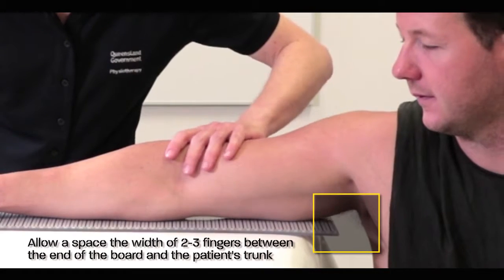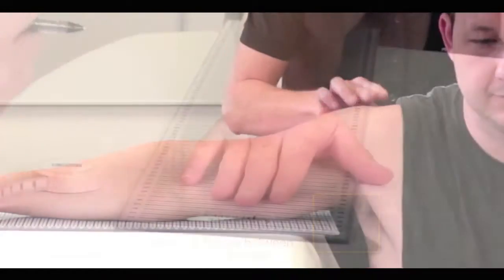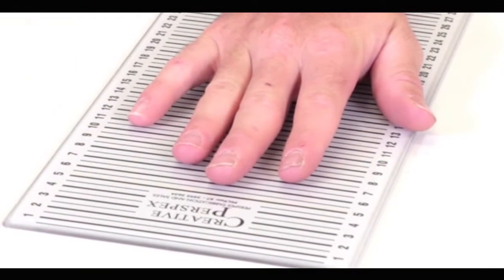Allow a space, the width of two to three fingers between the end of the board and the patient's trunk. Note the level of the tip of the third finger on the board and note this on the arm measurement form.